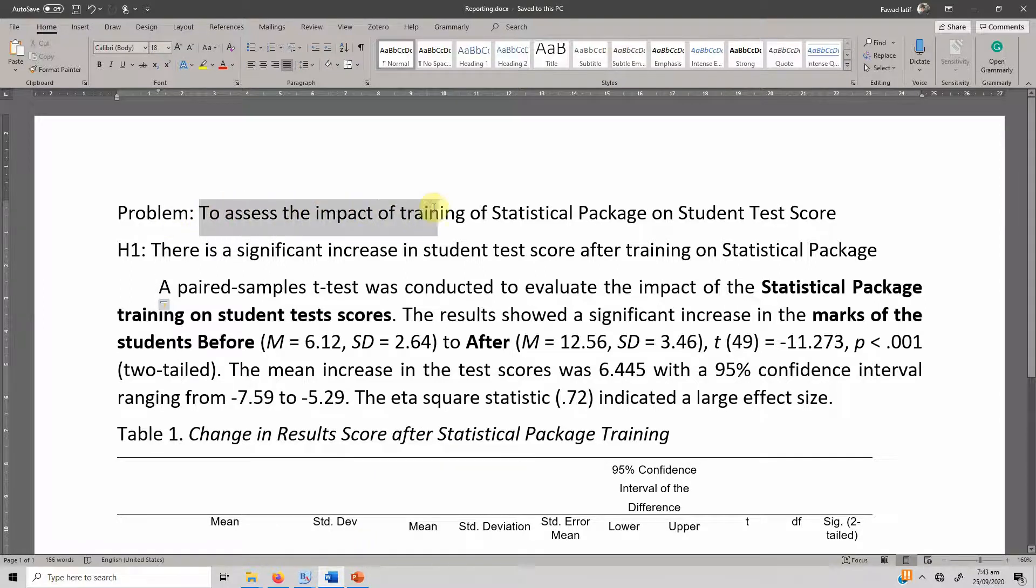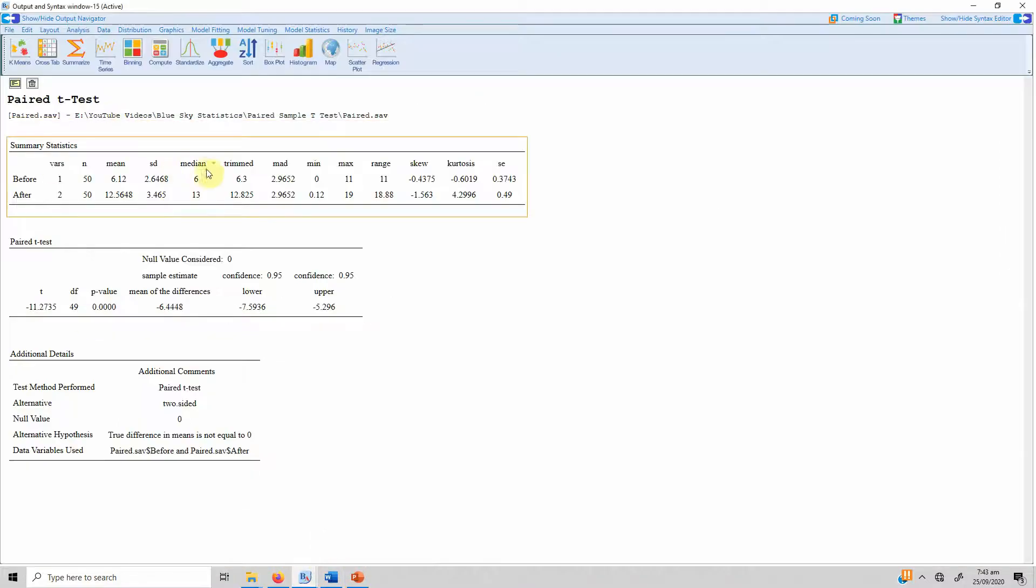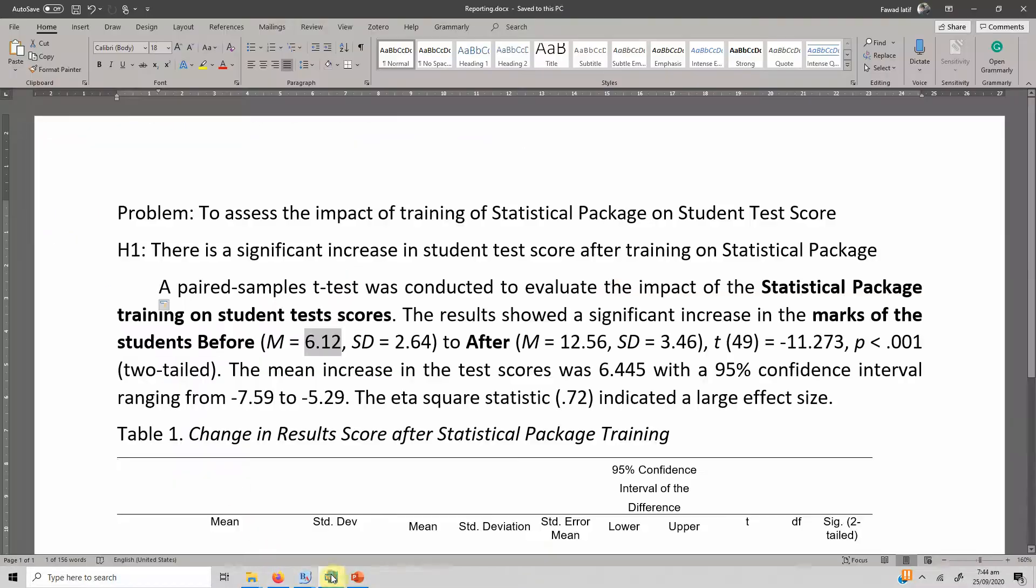So in this case the problem is to assess the impact of training of statistical package on student test score. Your alternate hypothesis is there is a significant increase in student test score after training on the statistical package. A paired-samples t-test was conducted to evaluate the impact of statistical package training on student test scores, so the intervention is statistical package. The results showed a significant increase in the marks of students before. So what was the mean before? It was 6.12, so here it is 6.12, and after it was 12.56, so it is here, after 12.56.